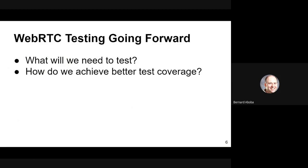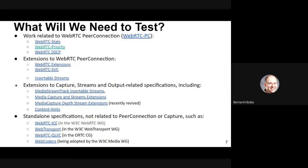I'd like to talk about what we're going to need to test going forward for some of the new work we're doing, and also how we achieve better coverage. What we need to test includes things related to peer connection — WebRTC stats, priority, DSCP — extensions such as WebRTC extensions, WebRTC SVC, and insertable streams, as well as extensions to capture streams and output specs.